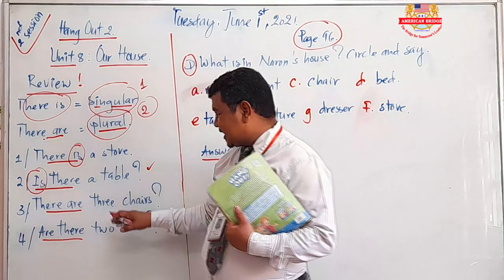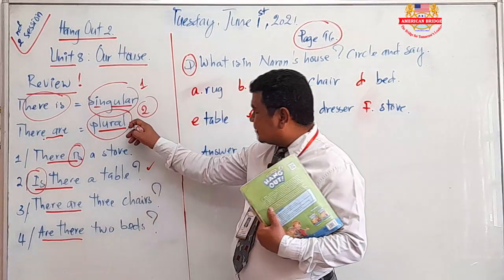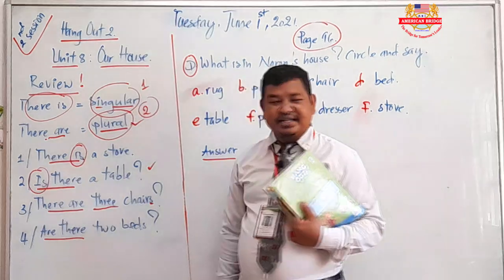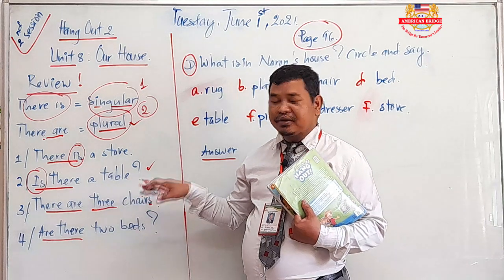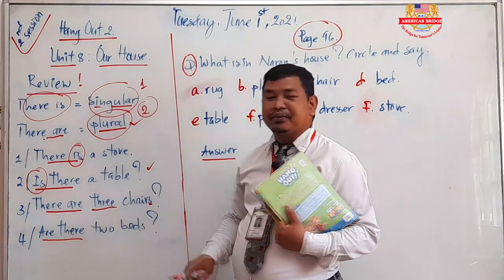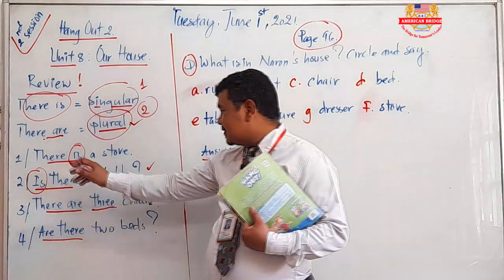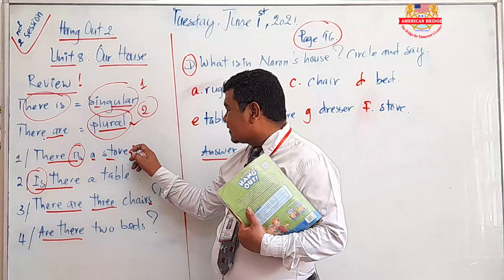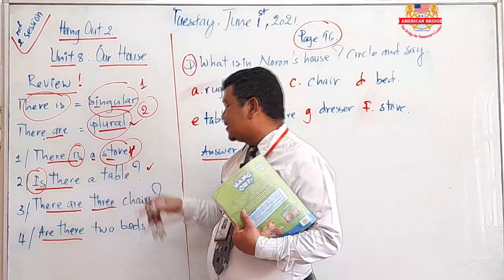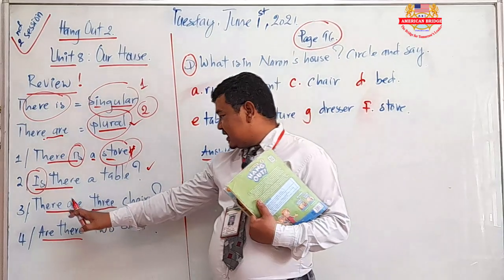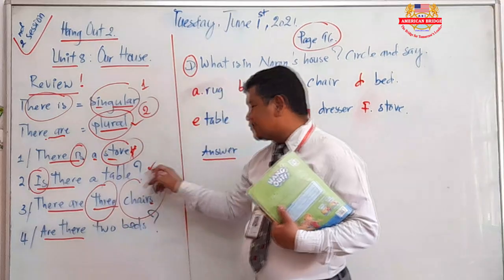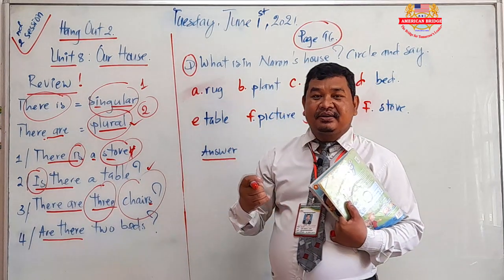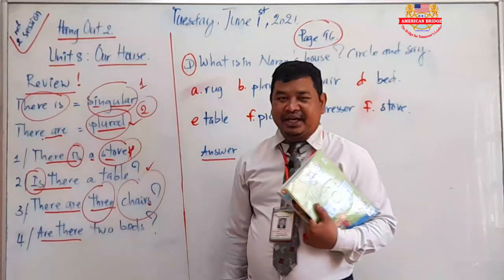'There are' means plural. For example: 'There are three chairs.' When you have two or more, the noun also gets a plural form with an 's' at the end. So plural plus plural: 'There are three chairs in my kitchen,' 'There are three chairs in my bedroom,' 'There are three chairs in my living room.'